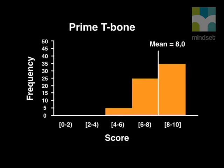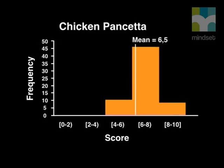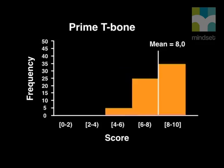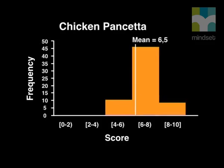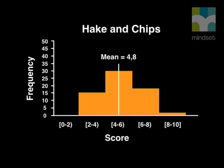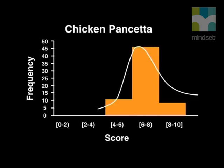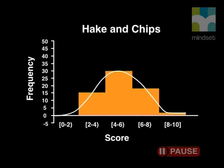Remember to draw the histogram: put the variable being measured on the x-axis and the frequency on the y-axis. The histograms for each meal make it easy to see which is least and most popular. The prime T-bone scores are quite high, with the middle around eight. The chicken pancetta scores are average, with its middle around six. The traditional battered hake and chips scores are low, with the middle around five. Notice the bell shape in each of these curves, showing similarity to the normal distribution discussed earlier.